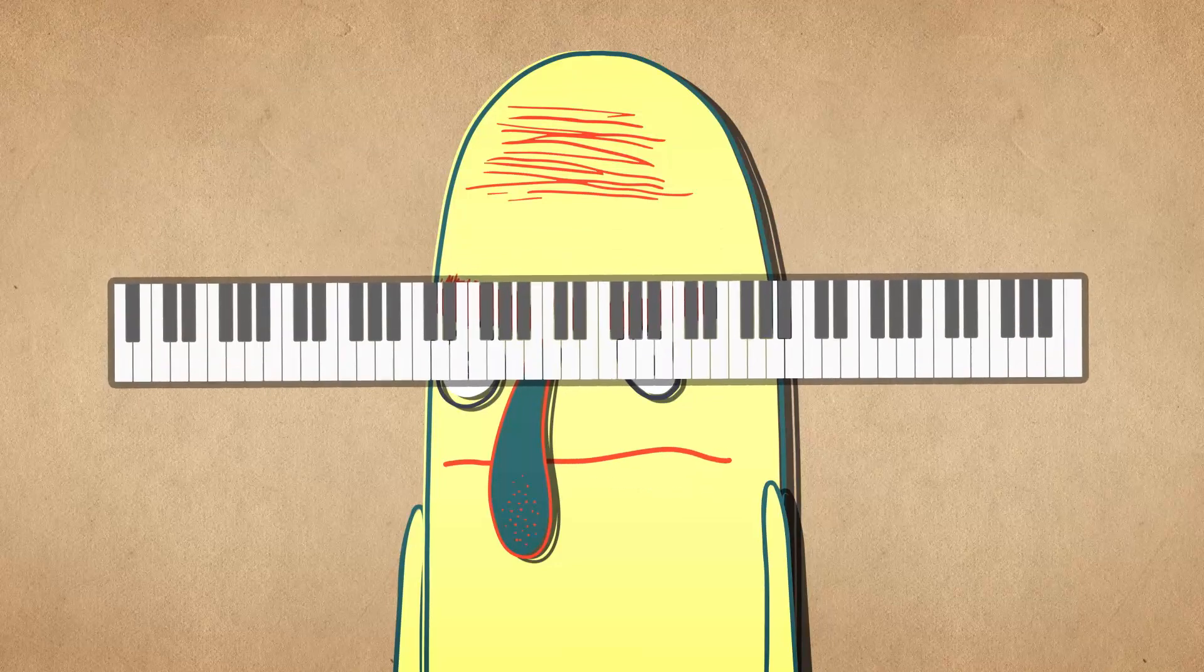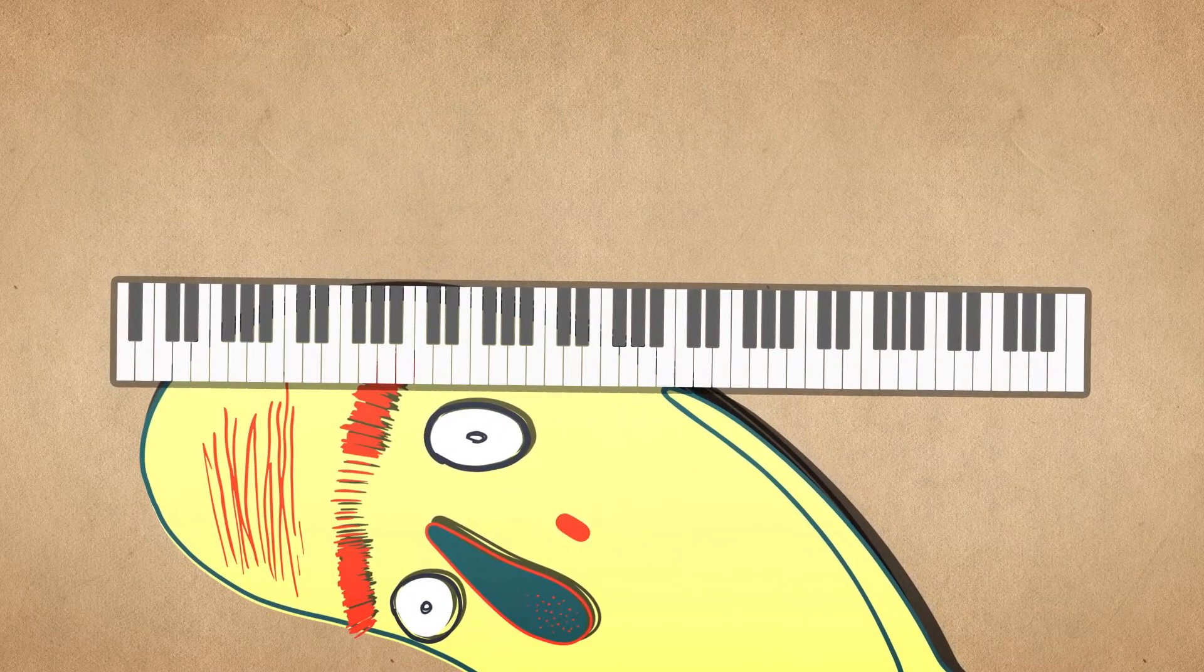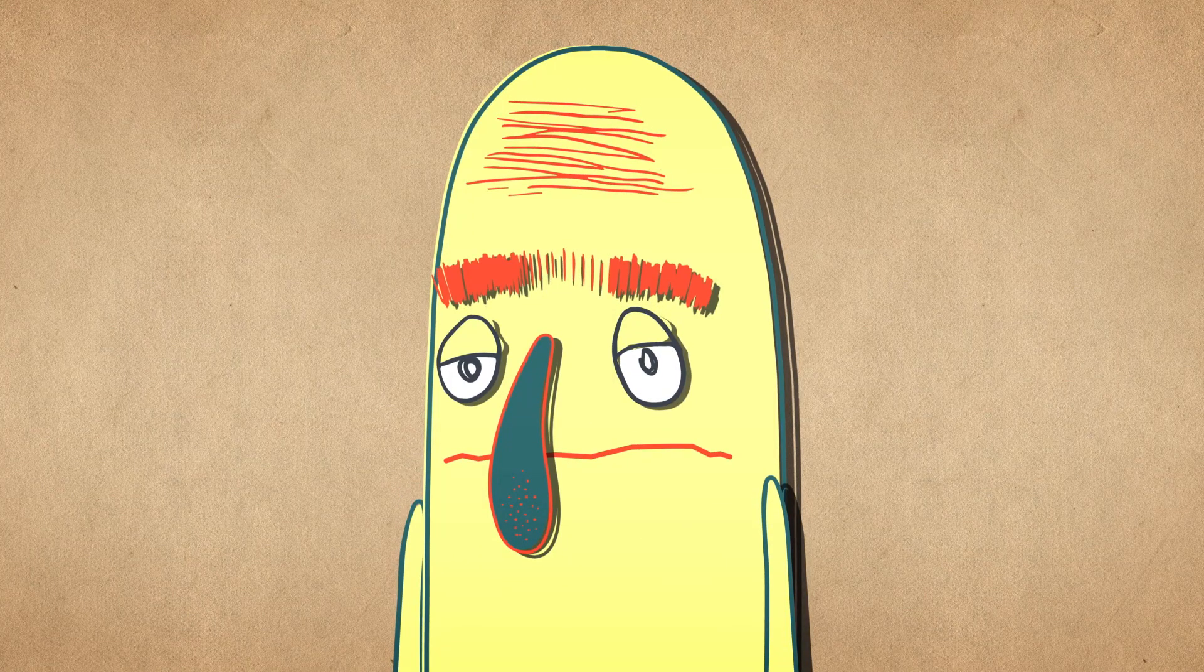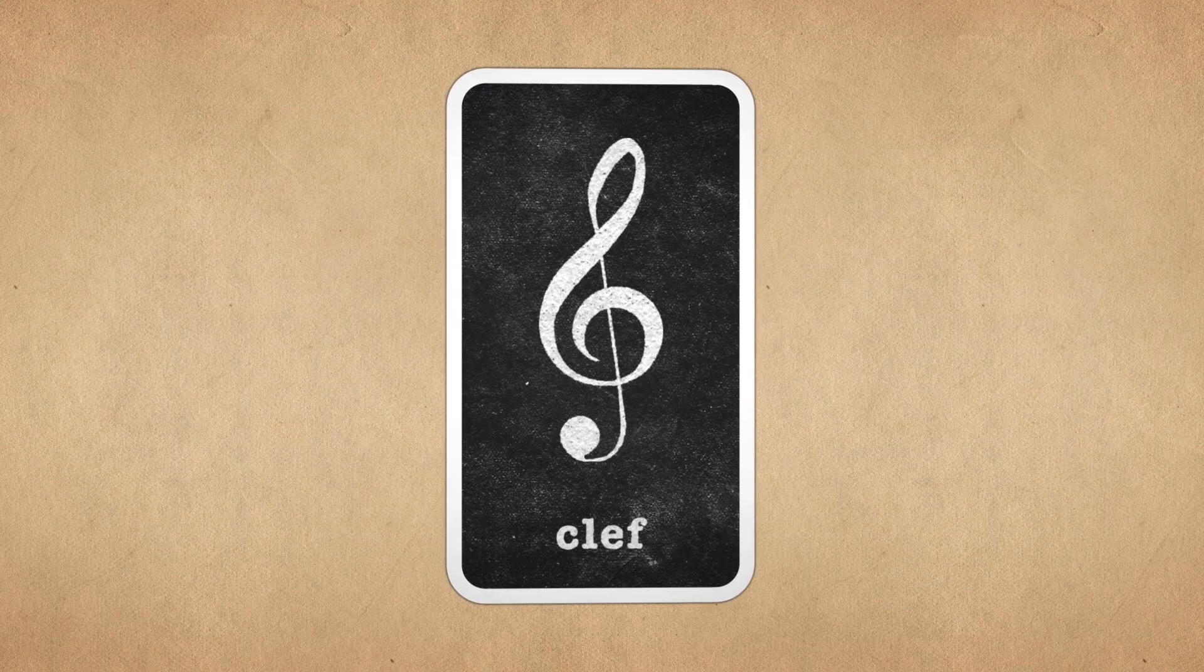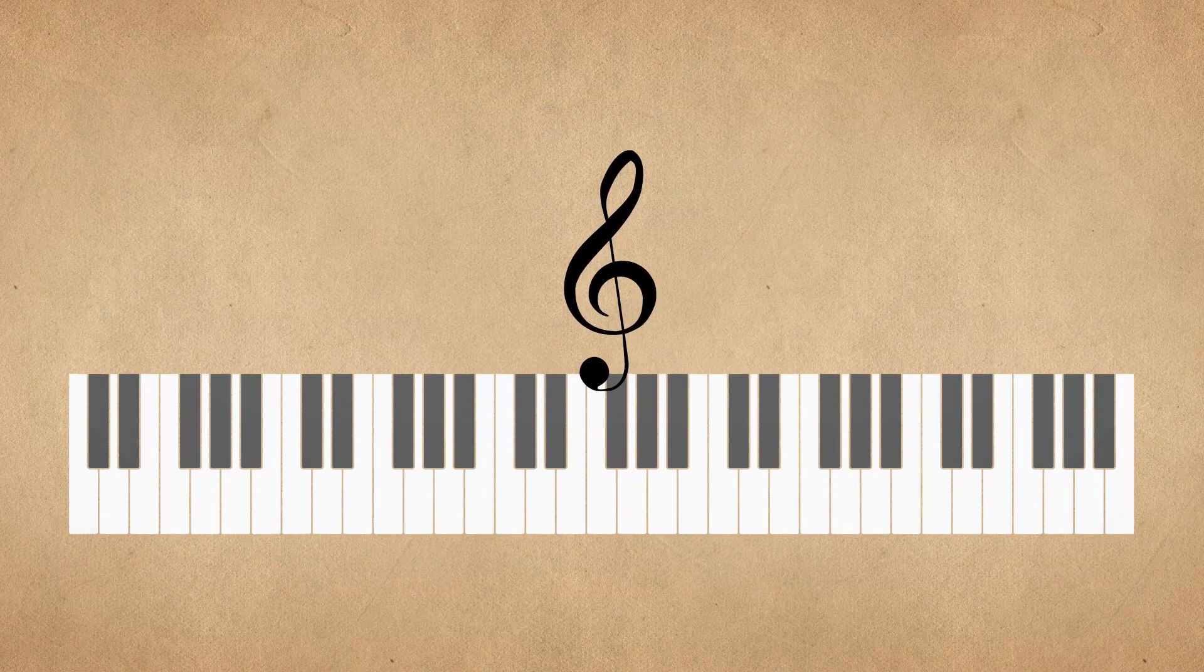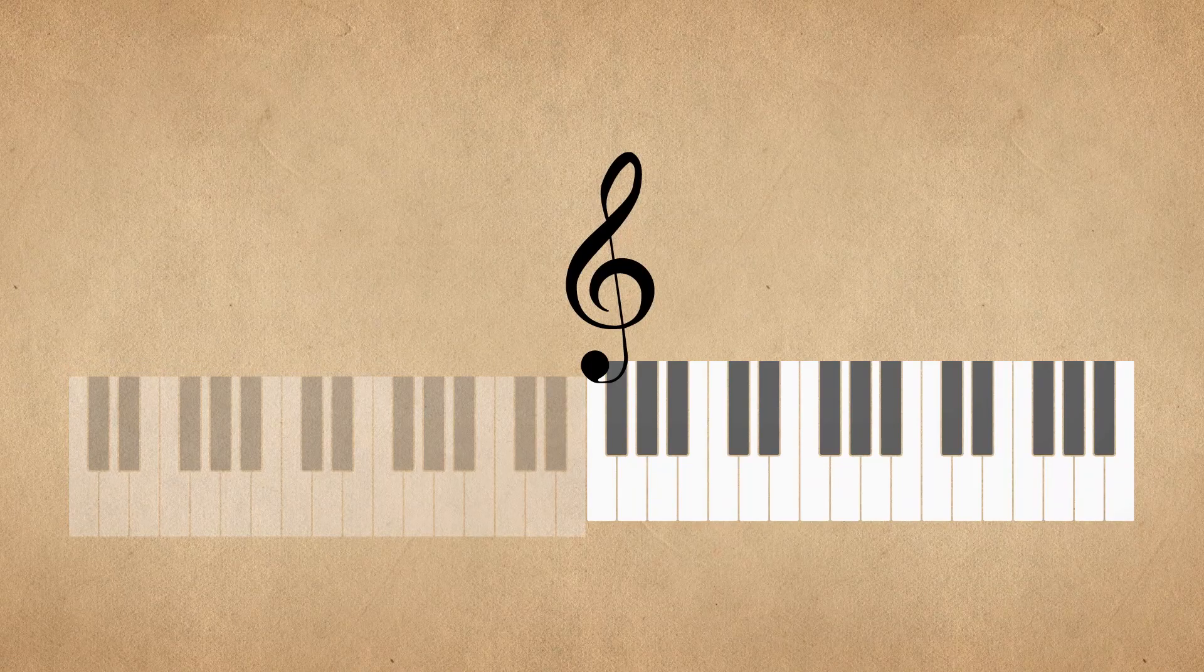A grand piano, for example, can play 88 separate notes. So how do we condense 88 notes onto a single staff? We use something called a clef. A clef is a weird-looking figure placed at the very beginning of the staff, and it acts like a reference point telling you that a particular line or space corresponds to a specific note on your instrument.